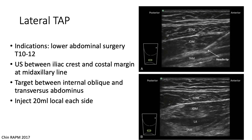The lateral TAP block can be used to cover incisions in the lower abdomen from T10 to T12. With the patient supine, the ultrasound is placed between the iliac crest and the costal margin at the mid-axillary line. The three muscles — external oblique, internal oblique, and transversus abdominis — are identified and the needle is advanced to the target. The correct location can be confirmed with saline; the plane should appear dark when you inject local in the right place, whereas an incorrect injection into the muscle will appear hazy.